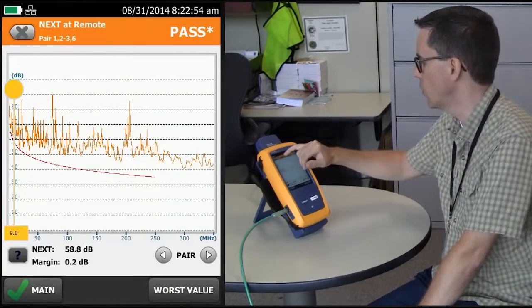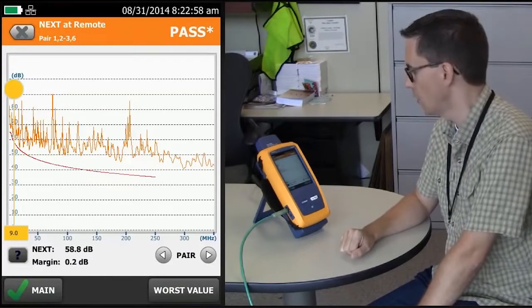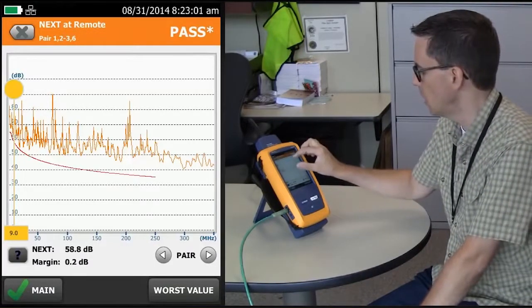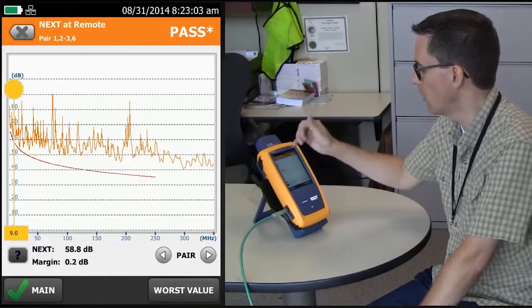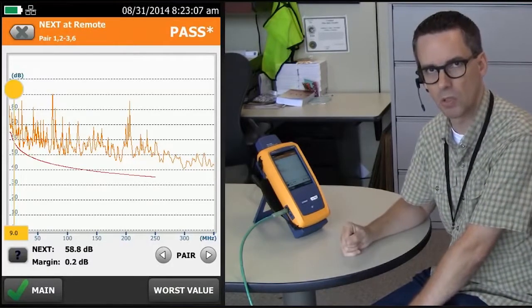In this case, in the top left-hand corner, we can see it's pair 1236. There's not much information to be gathered from this screen, apart from the fact that it's pair 1236 which has got the most significant amount of crosstalk on it.